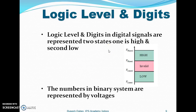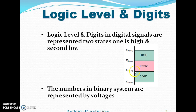Logic levels and digital signals are represented by two states: high and low. There is one gap between high and low which is called invalid. If a signal is found in that region, an approximation will assign it to either high or low. Finally, there will be only two values: high and low.